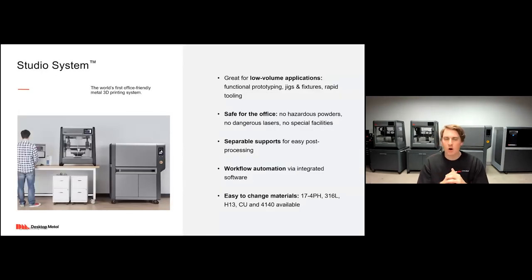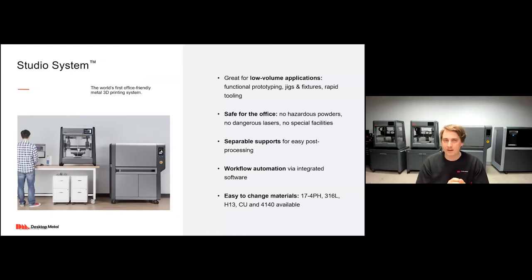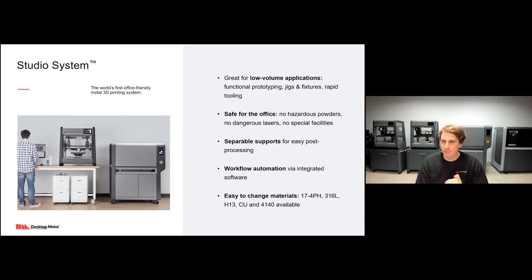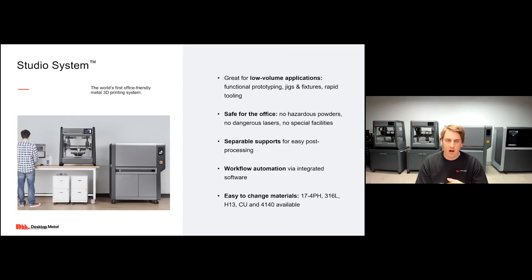The two printers we're going to be talking about today are the Studio System — the world's first office-friendly metal 3D printer, great for lower volume applications. It's very safe for the office: no hazardous powders, no dangerous lasers, no special facilities required. It has easy-to-use support structures, an automated workflow, and easy-to-change materials. Currently available materials include 17-4 PH stainless steel, 316L stainless steel, H13 tool steel, copper, and 4140 low alloy steel.